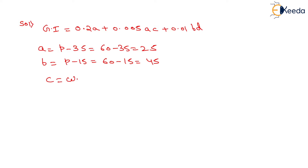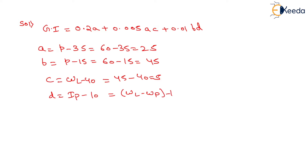Now C will be equals to liquid limit minus 40. The liquid limit is given as 45, so 45 minus 40 equals 5. Now D will be equals to plastic index minus 10. The plastic index is determined by subtracting plastic limit from liquid limit, so 45 minus 20 minus 10, which equals 15. That is the value of D.